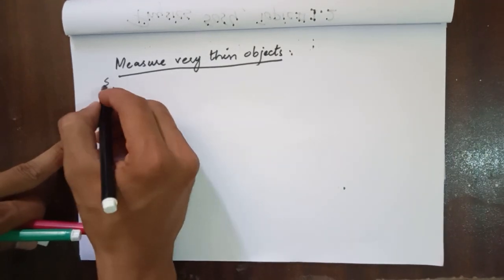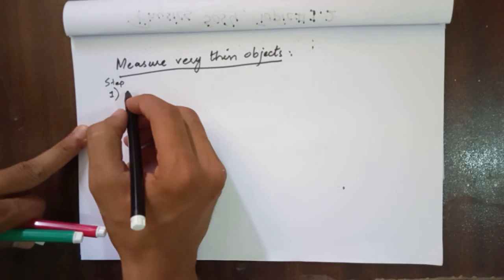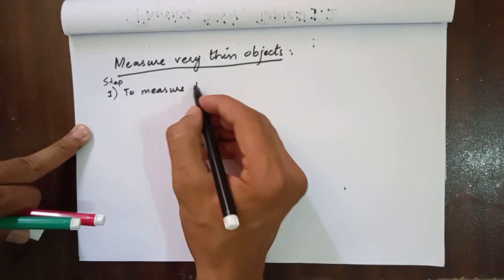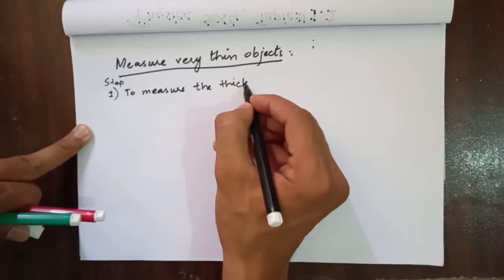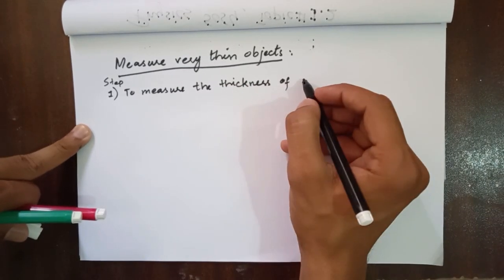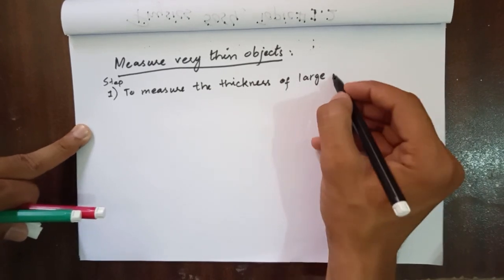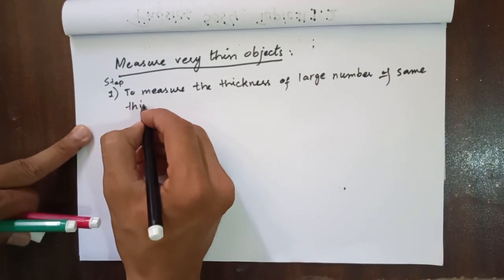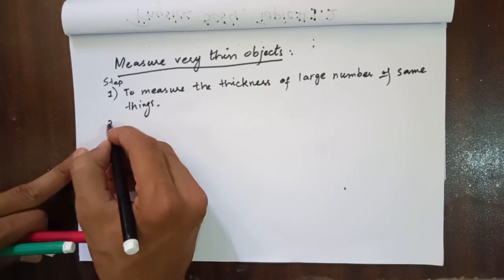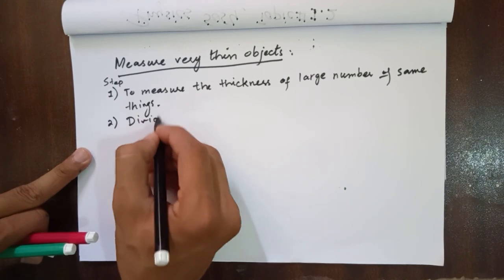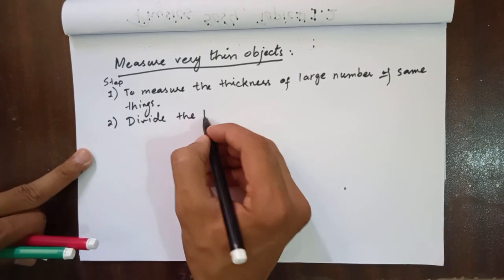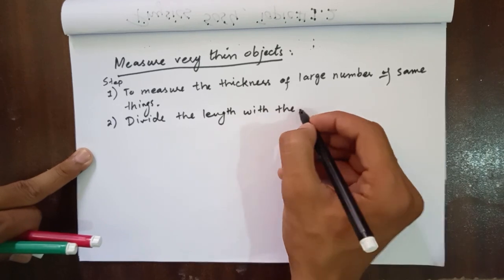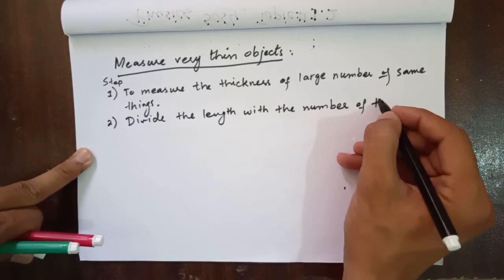First step, measure the thickness of a large number of the same things. And the second step is to divide the length by the number of those things.